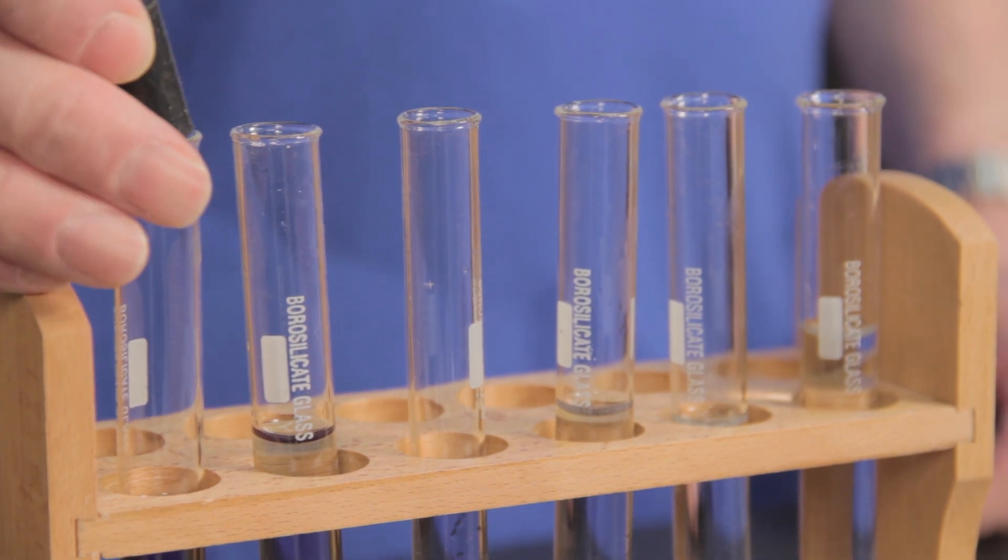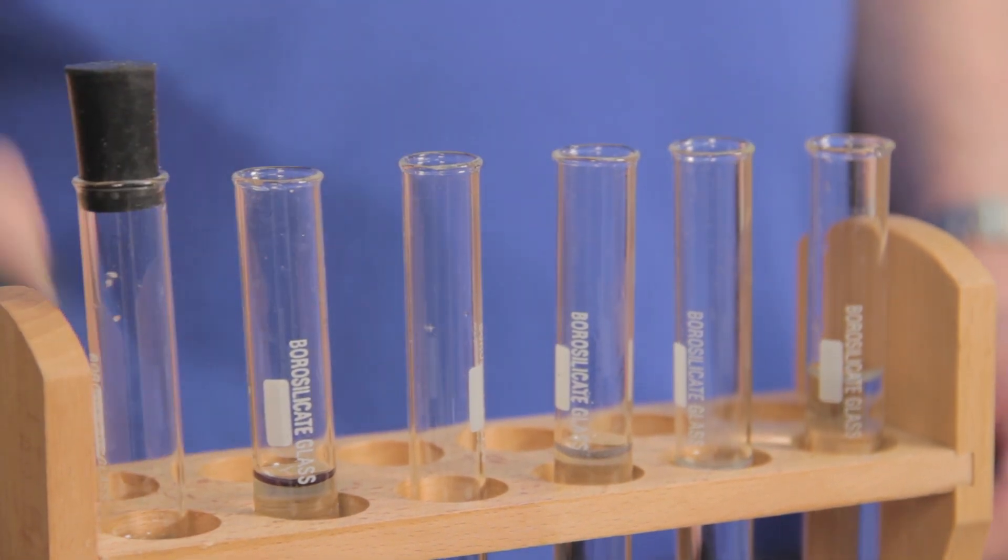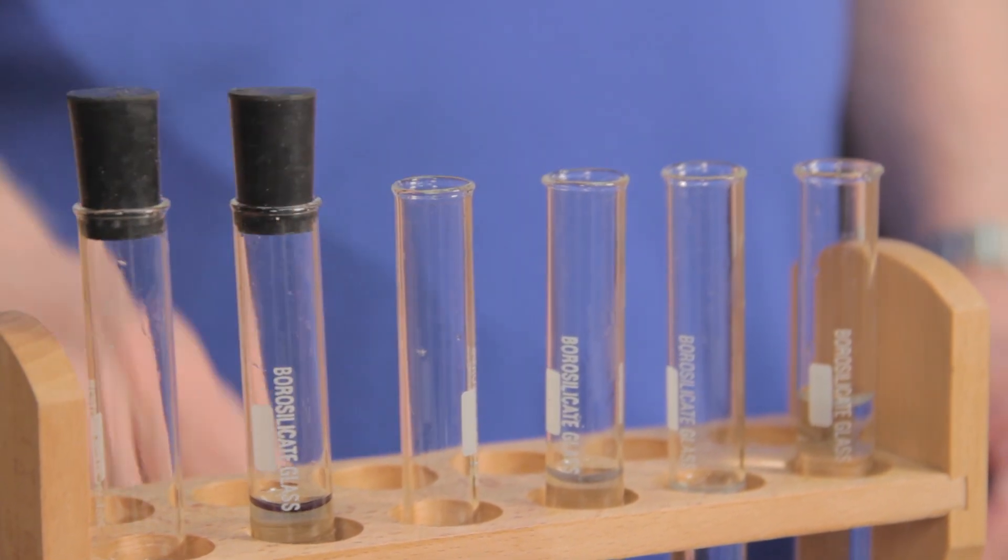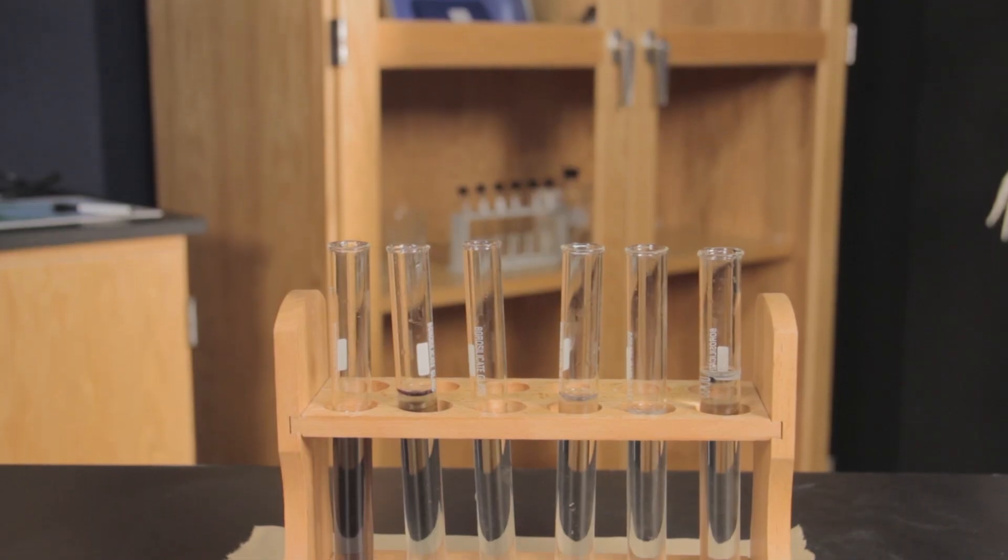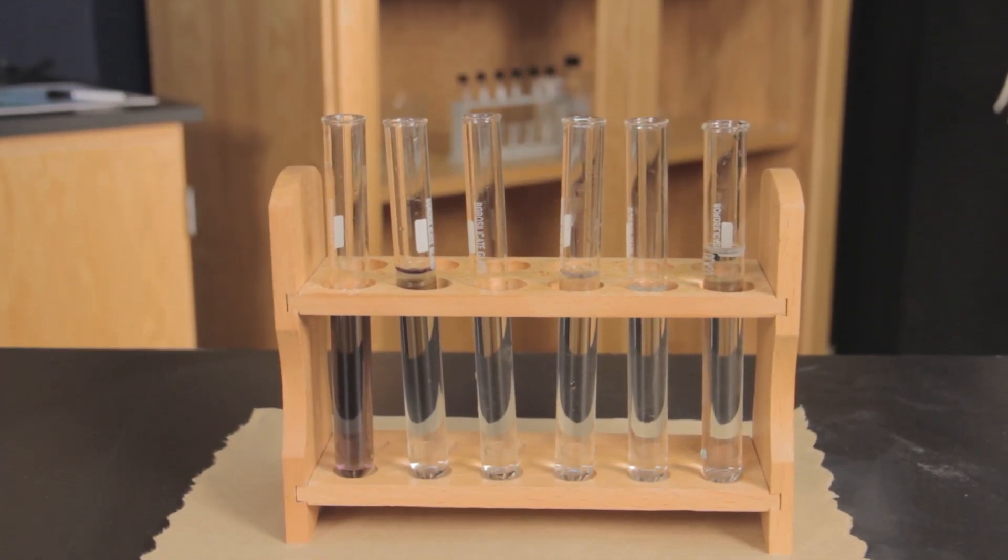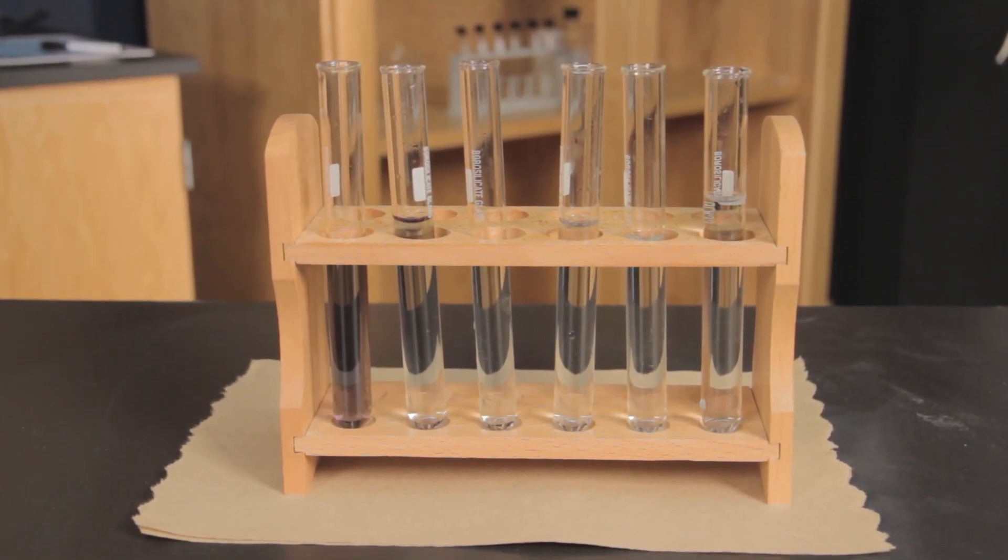Like with Erlenmeyer flasks, appropriately sized stoppers can close test tubes temporarily. Finally, the size of test tubes allows for easy and efficient storage in your lab.